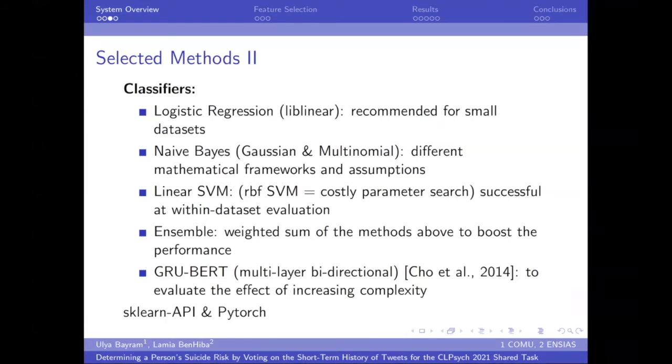We actually wanted to include RBF SVM because of its non-linear structure, but the parameter search using grid search methods turned out to be really costly, so we had to eliminate that. And we came up with our own ensemble method, which is a weighted sum of the methods above, linear SVM, Naive Bayes, and logistic regression, to boost the overall performance per tweet.